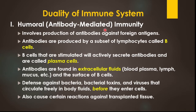Humoral immunity, or antibody-mediated immunity, involves the production of antibodies against foreign antigens. Antibodies are produced by a subset of lymphocytes called B-cells. B-cells that are stimulated will actively secrete antibodies and are called plasma cells. Antibodies are found in extracellular fluid, blood plasma, lymph, mucous, and on the surface of B-cells.